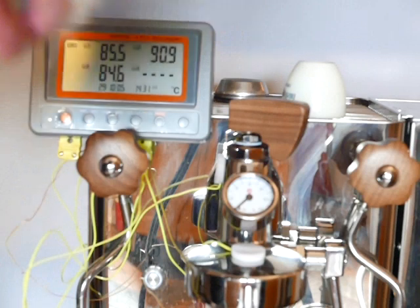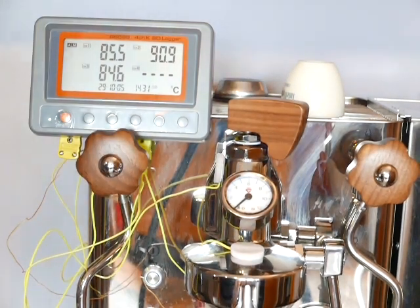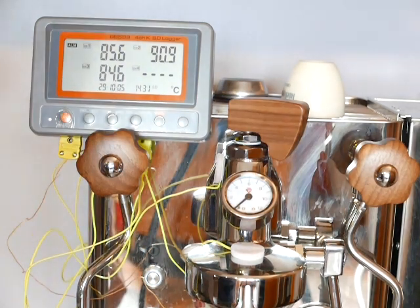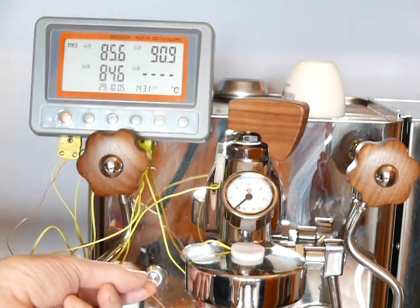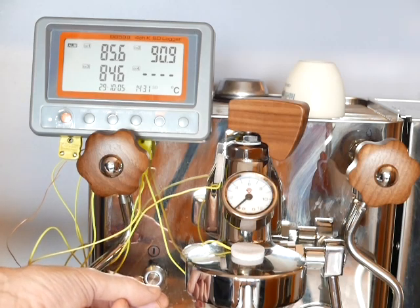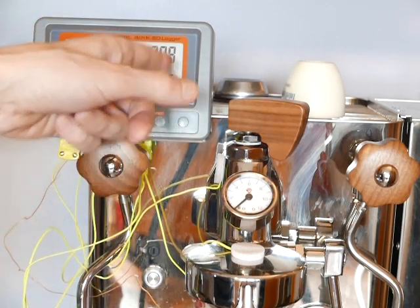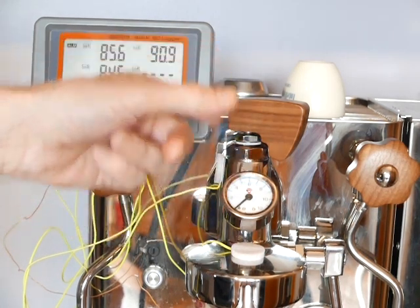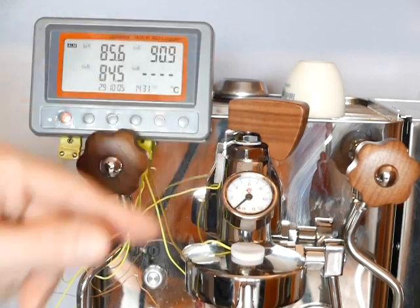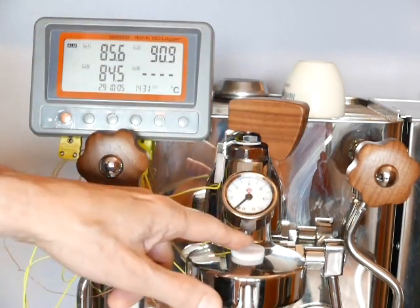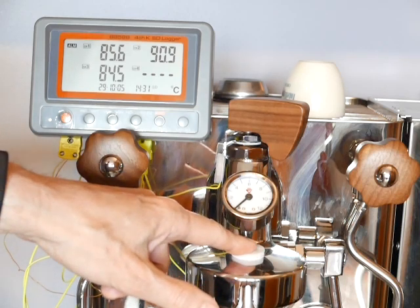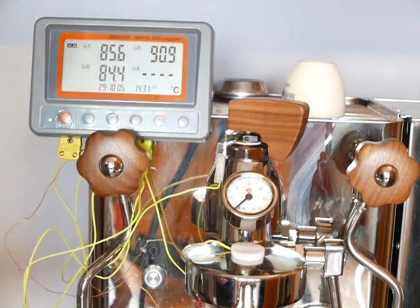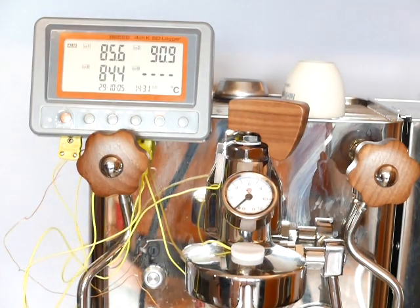Hello everybody, this is Jim Schulman and this is the Bianca all wired up for temperature control. We have a SCACE-style thermosensor here. On the second one we have a surface thermocouple monitoring the group temperature sitting at roughly 91 degrees centigrade, and a second surface monitor showing here at about 84.5 centigrade on the group bell.